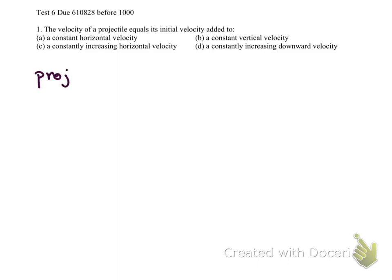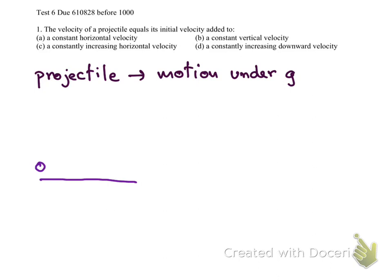We can say that a projectile is a motion under the gravitational acceleration. The difference between projectile motion and free fall is that in free fall, if we throw a ball upward and it goes downward, we don't have a horizontal initial velocity. If there is no horizontal initial velocity, it's a free fall.